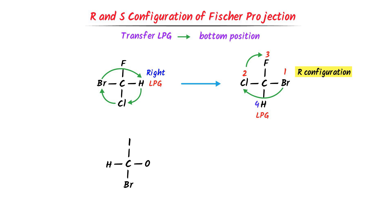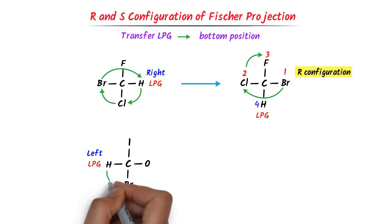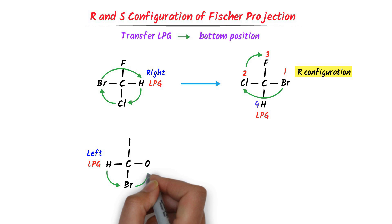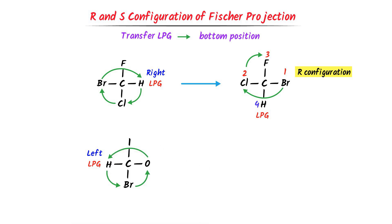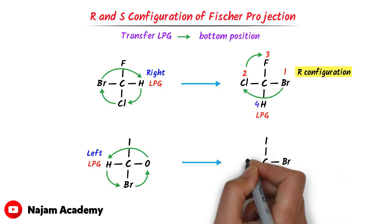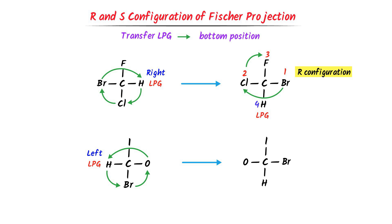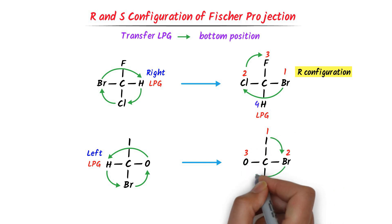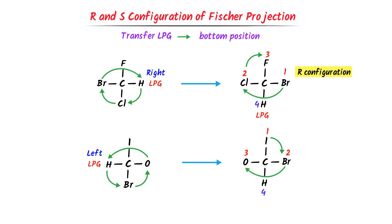Consider this organic compound. We can see that LPG or hydrogen is present at the left-hand side. I do not rotate the top group — I only rotate the remaining three groups in the anticlockwise direction. I shift hydrogen to the position of bromine, bromine to the position of oxygen, and oxygen to the position of hydrogen. I write iodine, hydrogen, bromine, then oxygen. Iodine has the larger atomic number, so first priority is given to iodine, then bromine, then oxygen. I go from first to second, then second to third — this is clockwise rotation, so R configuration is given to this organic compound.